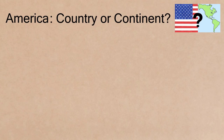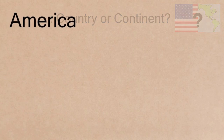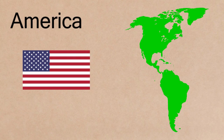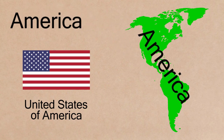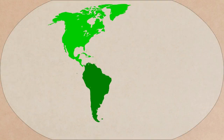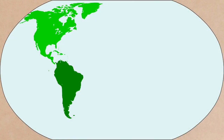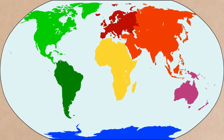In a previous video of mine, I talked about America, which could refer to both a country or a continent. In English, it generally refers to the country, the United States of America, but in other languages — Spanish for example — it refers to the continent. However, in English, these are two separate continents, part of the 7-continent model.